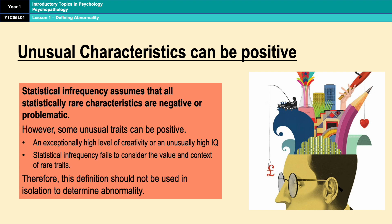However, a weakness of statistical infrequency is that it does not distinguish between desirable and undesirable rare traits, and it assumes that all statistically rare characteristics are negative or problematic. Some unusual traits can be positive — for example, having an exceptionally high IQ or exceptionally high creativity is statistically infrequent but is generally seen as advantageous rather than problematic. This suggests that statistical infrequency doesn't consider the value and context of rare traits, and therefore this definition should not be used in isolation to determine abnormality.